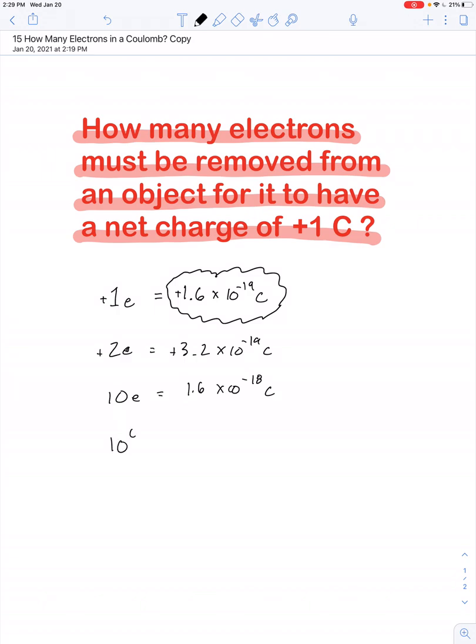A million electrons, we'll call that 10 to the 6th, would lead to a charge of 1.6 times 10 to the negative 13th coulombs.